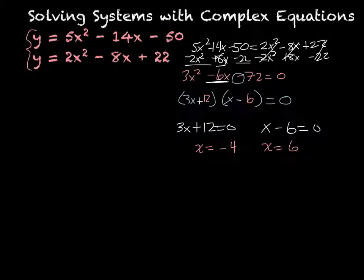And then at this point, we need to find our y's. We have our x values. Now we need to find our y values. So we pick one of our two original equations and plug it in. So I'm going to pick y equals 2 times negative 4 squared minus 8 times negative 4 plus 22, just because it's a little smaller. And then if I type that into the calculator, I get y equals an 86.